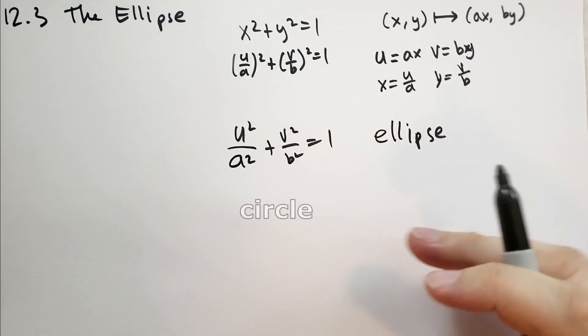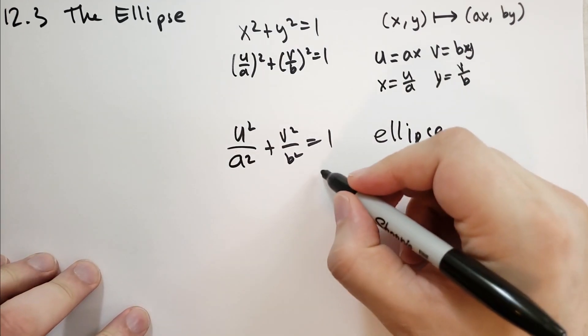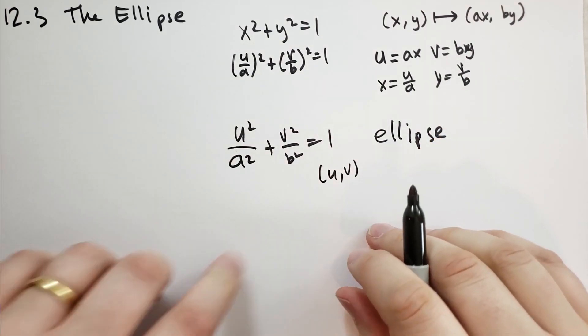An ellipse is basically a circle that has been stretched in one or the other directions. The set of points u, v satisfying this equation is, in fact, an ellipse.